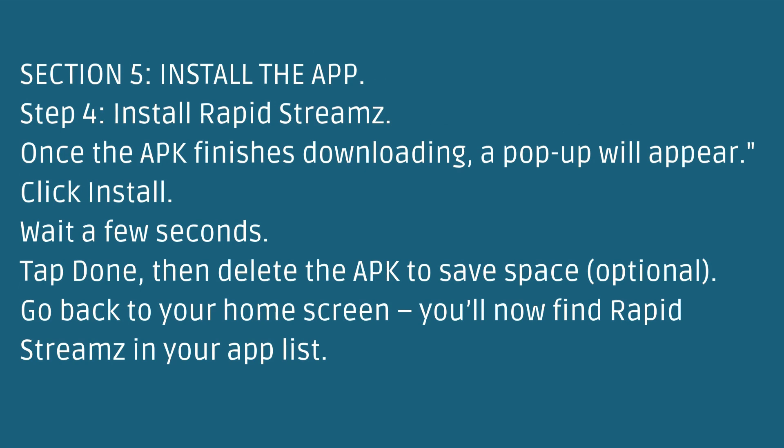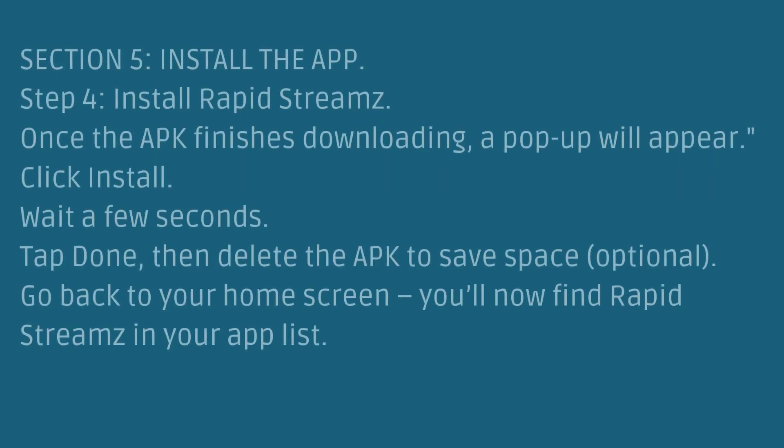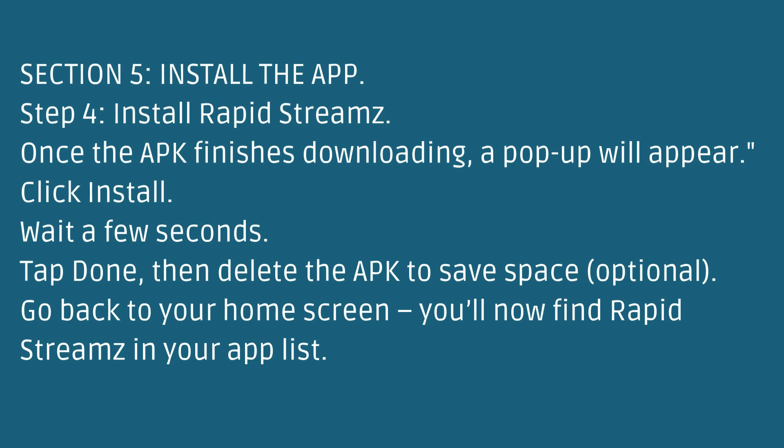Section 5: Install the App. Once the APK finishes downloading, a pop-up will appear. Click Install and wait a few seconds. Tap Done, then delete the APK to save space. Go back to your home screen — you'll now find RapidStreams in your app list.